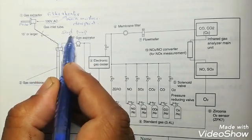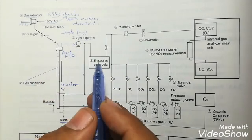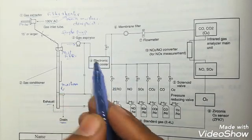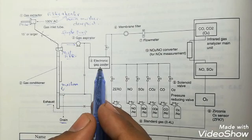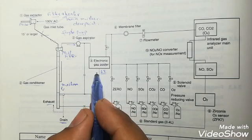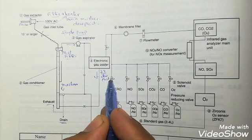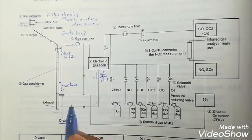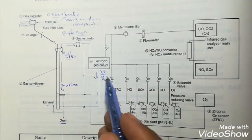This sample is extracted by this gas aspirator, which is a sampling pump. This sucks the sample from the probe and then gives it to the electronic gas cooler.